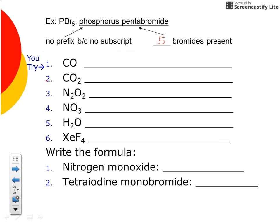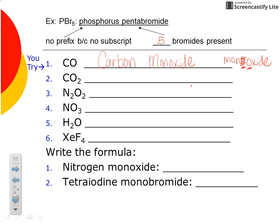Let's try some examples — these are all molecular compounds with only non-metals. For CO: there's only one carbon, so no prefix needed — we simply say carbon. The second element always uses a prefix, and there's one oxygen, so we use mono. That gives us monoxide. You're all familiar with the poisonous gas carbon monoxide. Note: when mono ends in O and oxide starts with O, you drop one O — so it's monoxide, not mono-oxide.